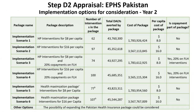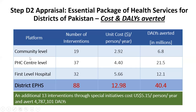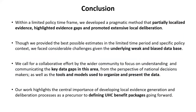For appraisal by the NAC and steering committee, six different implementation scenarios were developed. The Inter-Ministerial Health and Population Forum approved a district-level package combining community-level, PHC-level, and first-level hospital interventions, composed of 88 interventions with a cost of $13 per capita per year, plus 13 additional interventions through special initiatives like nutrition, hepatitis, and HIV. Within a limited policy time frame, we developed a pragmatic method that partially localized evidence, highlighted evidence gaps, and promoted extensive local deliberation, though we had considerable challenges given the underlying weak and biased database. Our work highlights the central importance of developing local evidence generation and deliberative processes as a precursor to defining UHC benefit packages going forward.